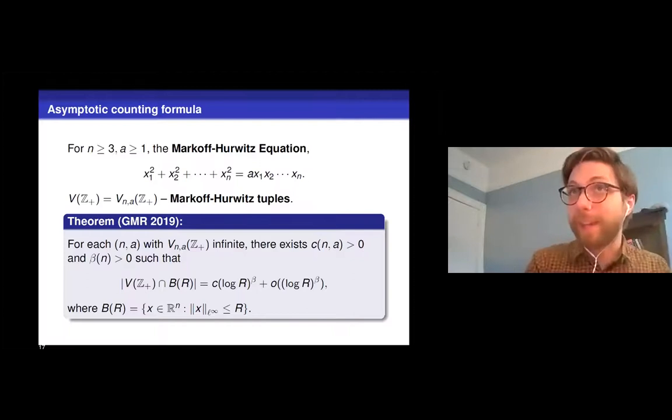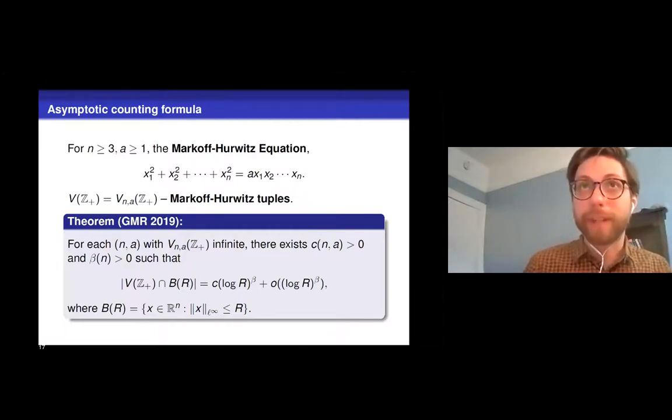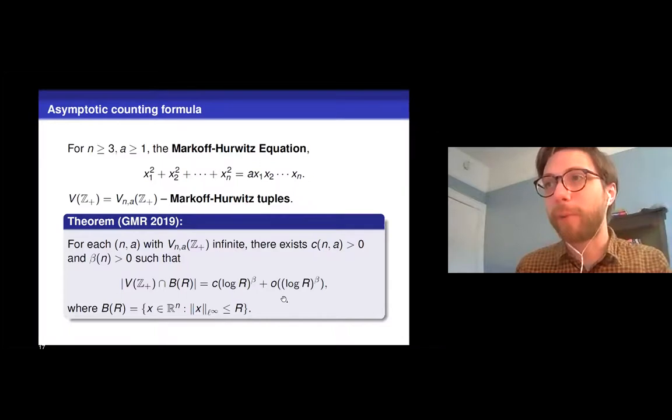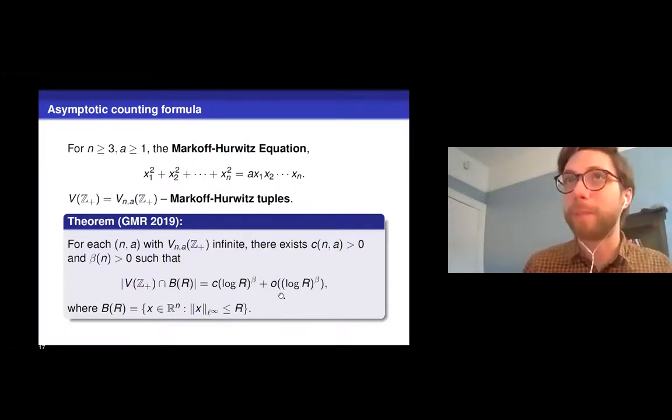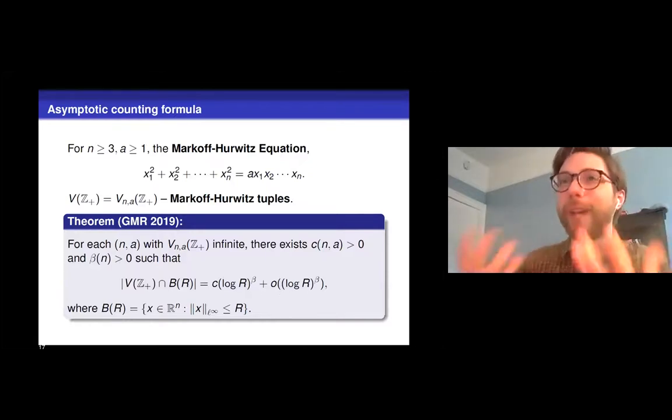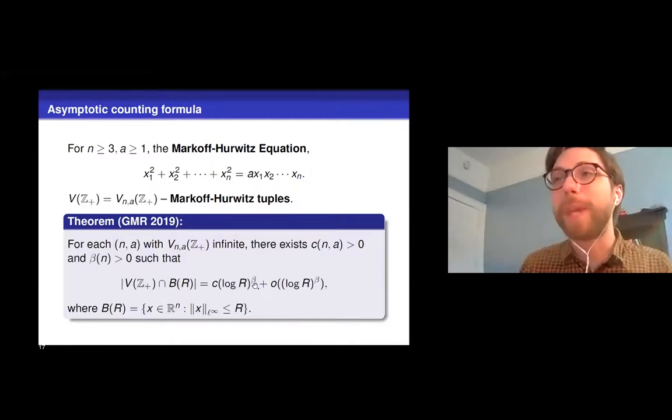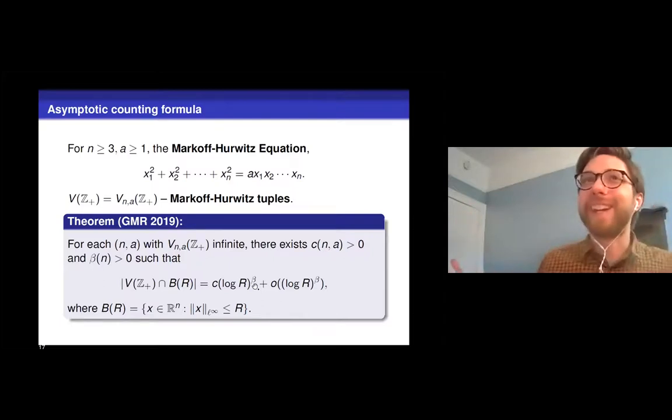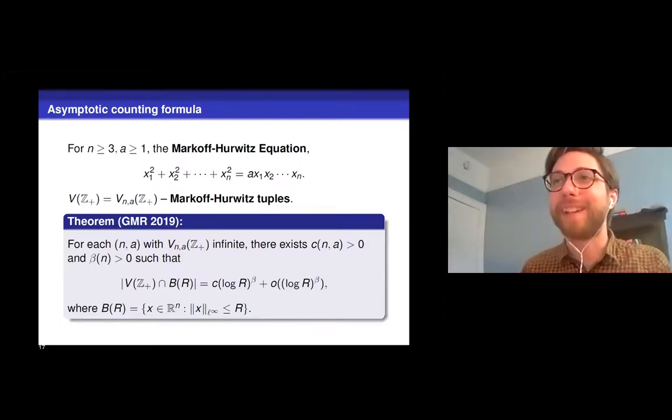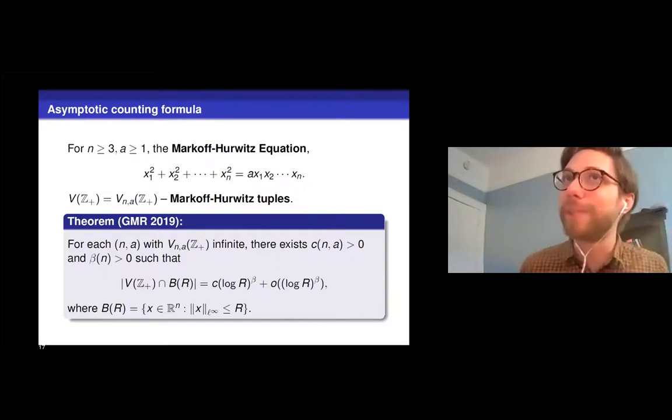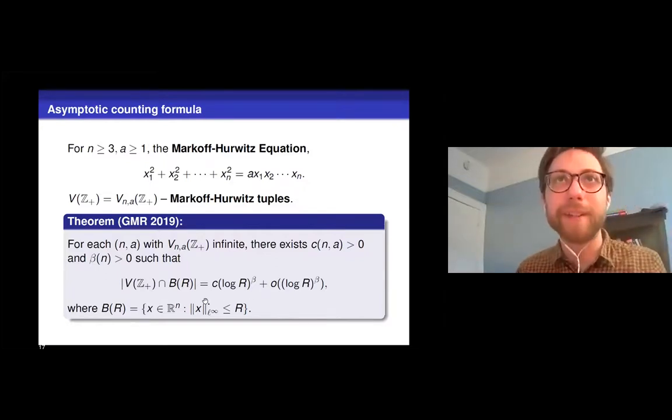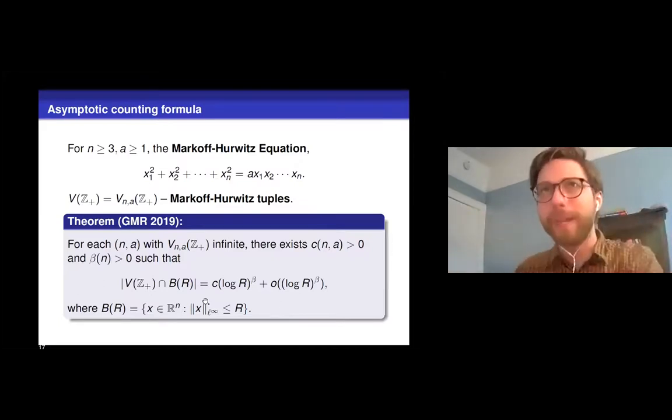All right. So compare this to Zagier's result for the n equals three setting and a equals three setting. We might notice right away that our error term here is certainly weaker. We don't have an explicit big O error term, we're just going to say it's a little o of the main term. And the other sort of obvious thing staring at us in the face is this beta over here. What is that beta?